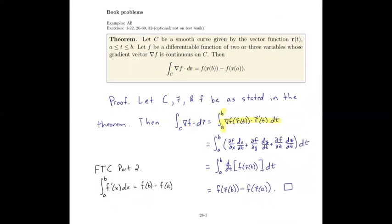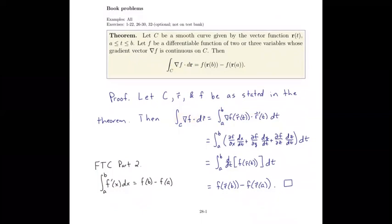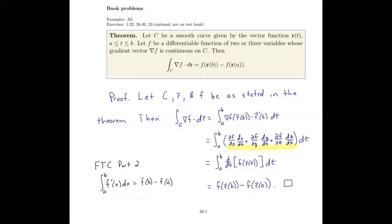The gradient of f at r dotted with r prime of t is the vector of partial derivatives of f with respect to x, y, and z, dotted with r prime of t which is dx/dt, dy/dt, dz/dt. When we dot these two vectors we get the sum of those products. Looking at the integrand, we realize that's just the expanded chain rule — the total derivative with respect to t, d/dt of f(r(t)).